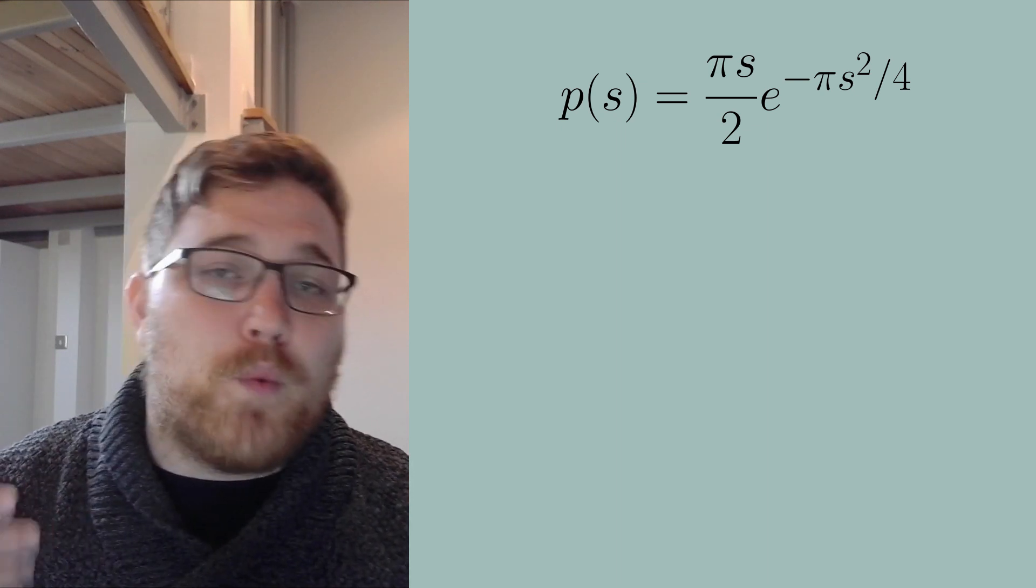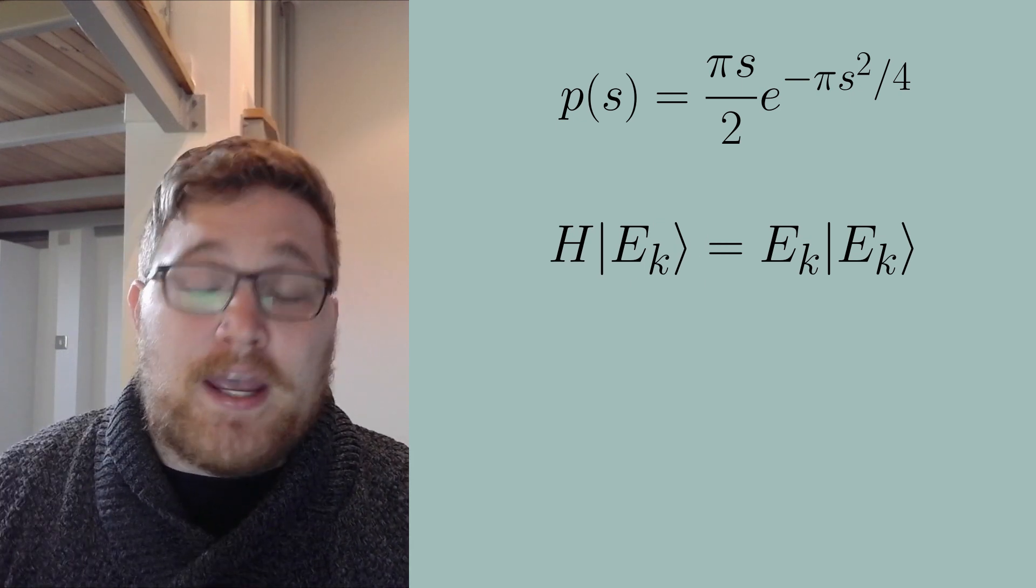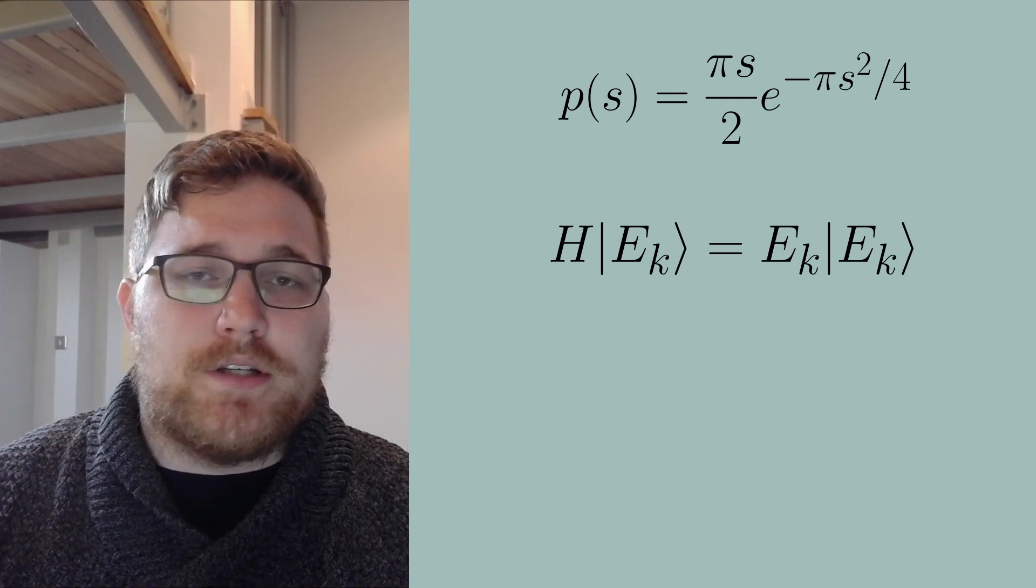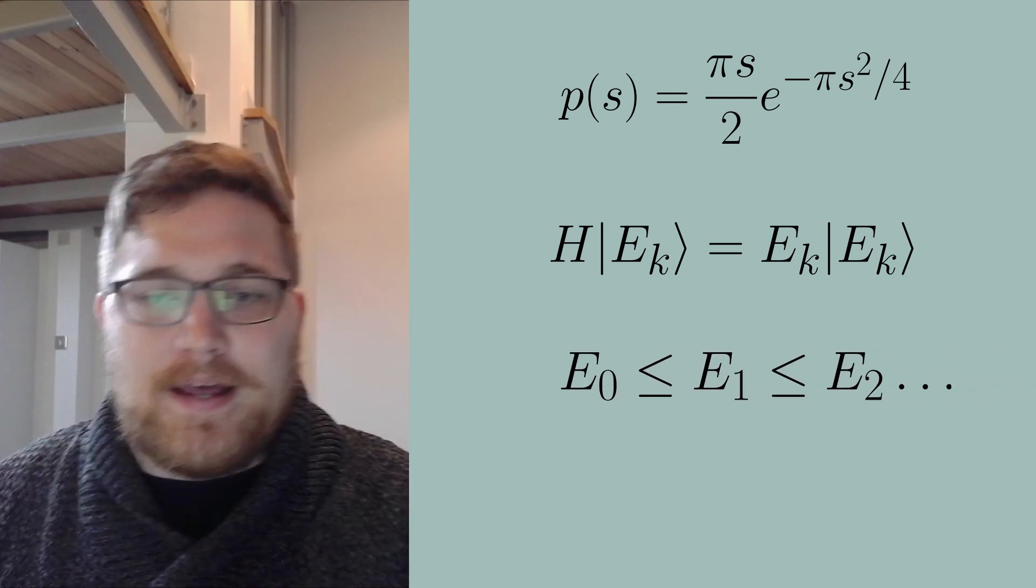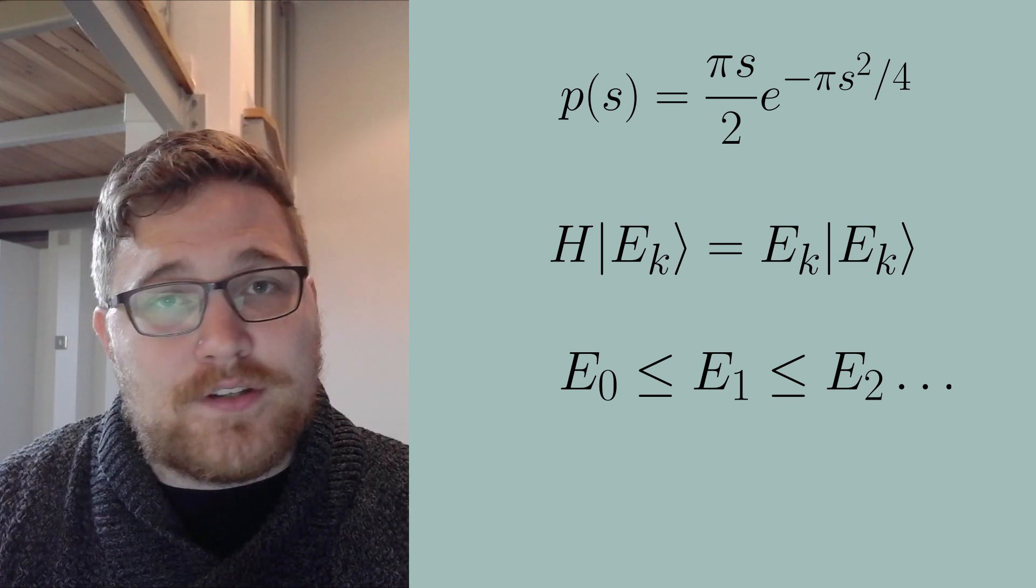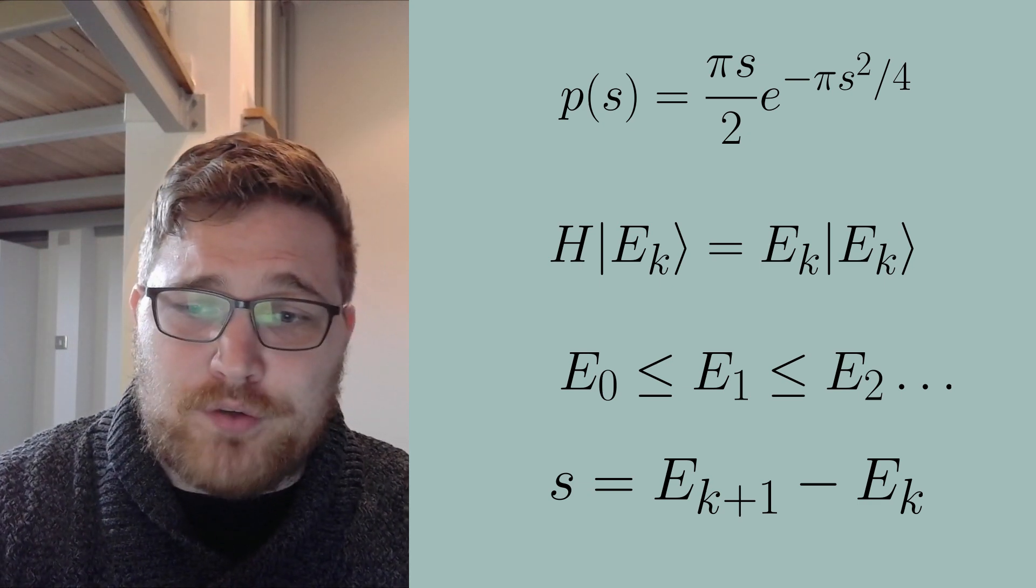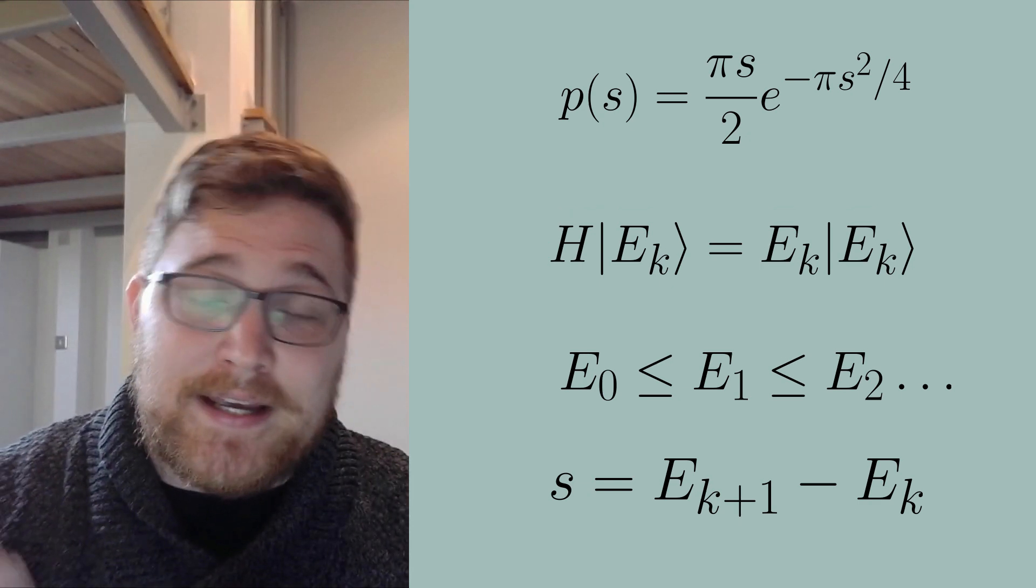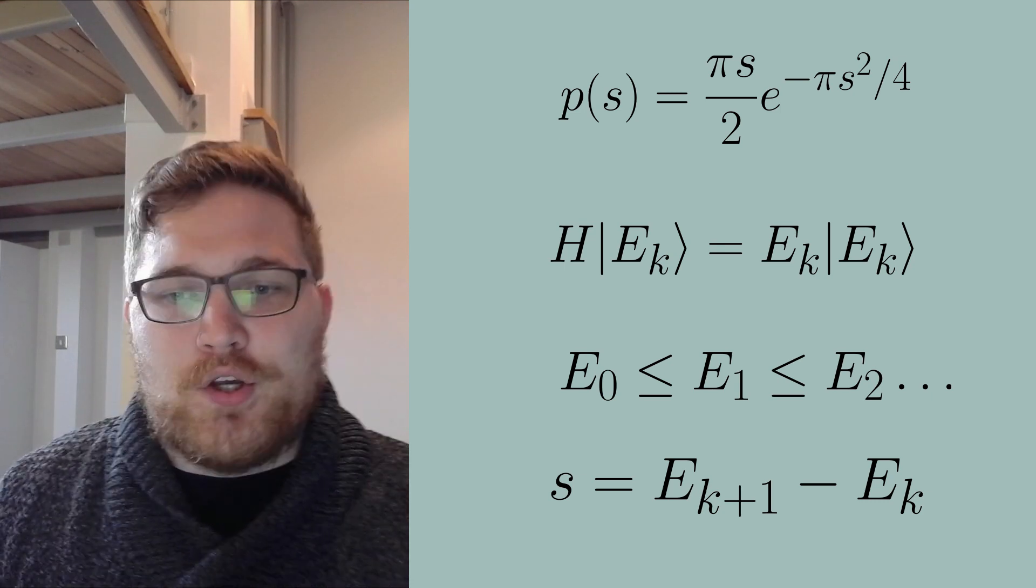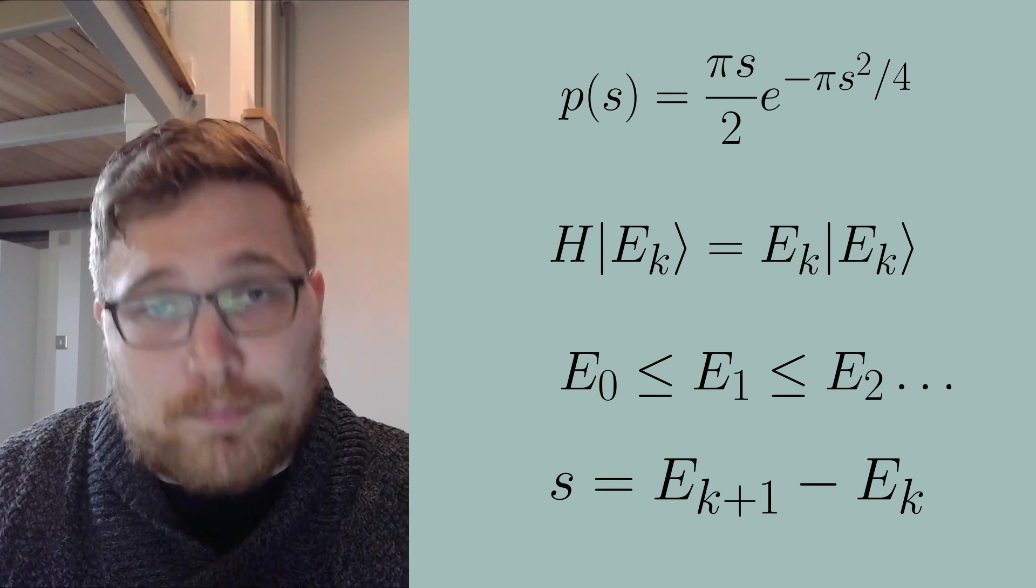So what exactly does that mean? Assume we have solved our eigenvalue problem of the Hamiltonian and we have all of the energies of our system. Then if we organize our energies from smallest to largest, then s in the probability equation that we have is the difference between neighboring energy eigenvalues. And the probability distribution for the gaps in our spectrum is given by the Wigner-Surmise.